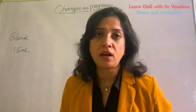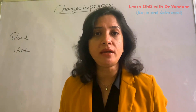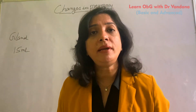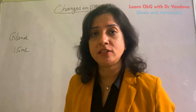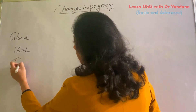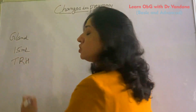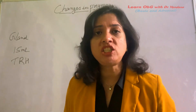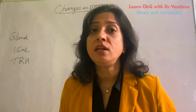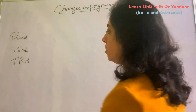One important thing to remember: any goiter during pregnancy is not normal. Coming to TRH — is there any change in TRH? Actually no, there is no change in thyrotropin releasing hormone during pregnancy. Coming to the TBG level — the thyroid binding globulin, which is the protein that binds to the hormone — its levels gradually increase during pregnancy.